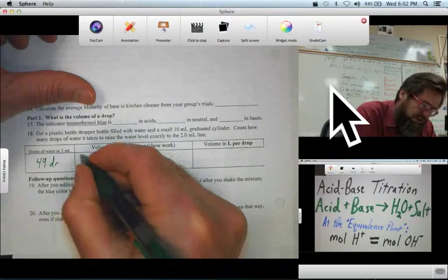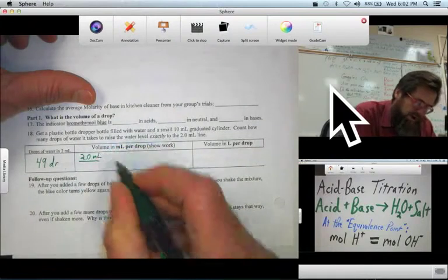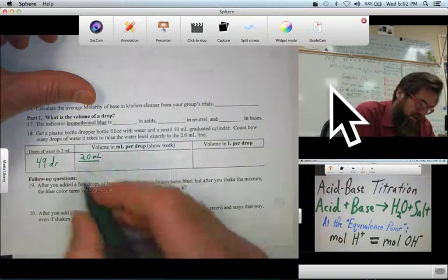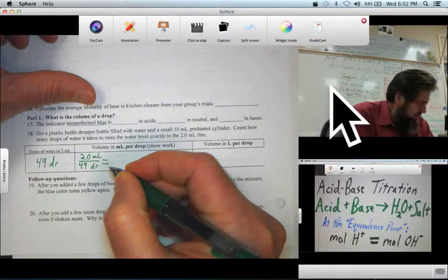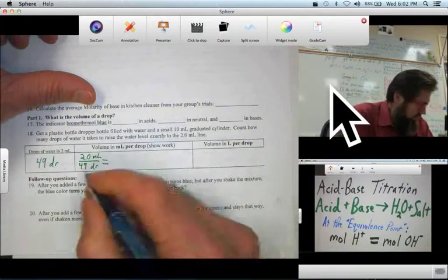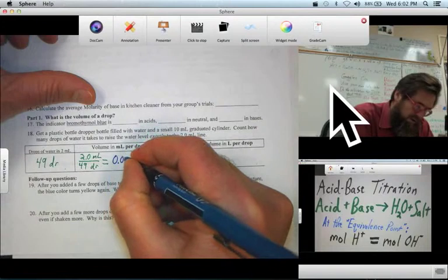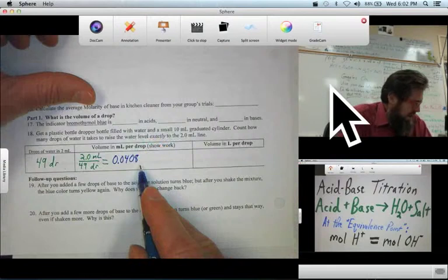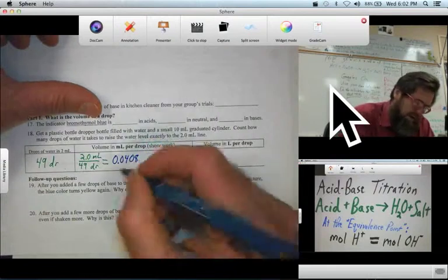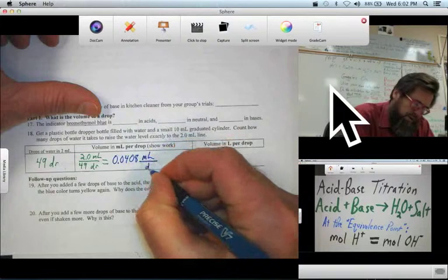And our calculation is the volume in milliliters per drop. Well, let's put the milliliters. Remember, we use 2 milliliters. 2.0 milliliters divided by milliliters per drop. Well, we had 49 drops. So let's do the math. And if you take out your calculator and do it, it comes out to 0.0408. Yours should be similar but different.